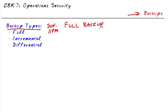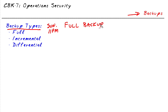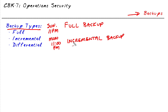Now what's the negative of that? The negative is it takes time. If you have 1200 terabytes of data, it's gonna take a lot of time to back all of that up. So because it does take so long, we might not want to do a full backup every single night. For example, maybe we do the full backup on Sunday, and then on Monday at 11 p.m. we do something called an incremental backup. And what the incremental backup does is simply back up all the data that has changed since the last backup.